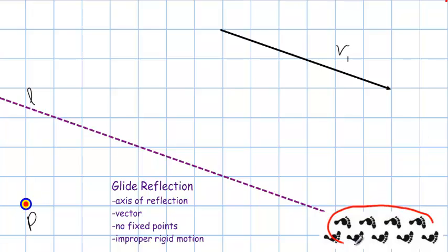Down here in the corner there's an example of a glide reflection. Each little footprint is slid and then reflected across the axis of reflection.